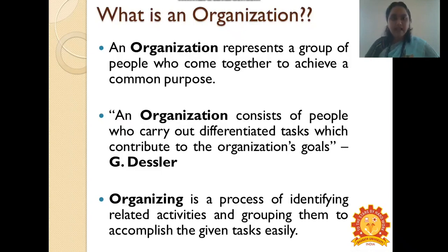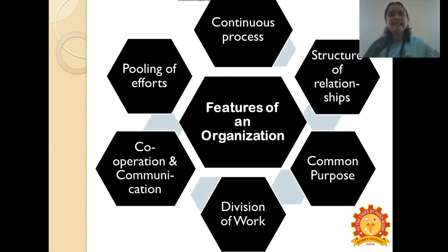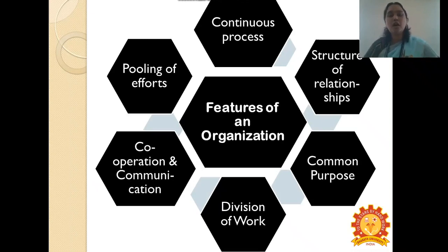Coming to the features of organization, the first feature is that it is a continuous process. An organization is a place where activities are carried out in a systematic, planned manner, and these activities take place continuously with a layout of a plan behind them. The second point is that there are structures of relationships. Organizations have hierarchies, and these hierarchies describe the formal structure of an organization, which may include top level, middle level, and lower level management.